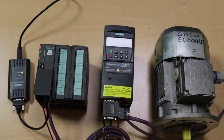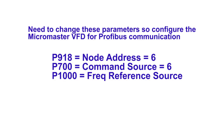First we have to make some settings in the VFD and change some parameters so that our VFD is compatible to communicate with the S7300 PLC via Profibus. The first parameter is P918, which is the node address. We have to enter the node address of the VFD — in our case I have entered address 5. The second parameter is P700, the command run source, and we have to set it to 6. By setting it to 6 we configure the VFD to take the run command from the S7300 PLC via Profibus.